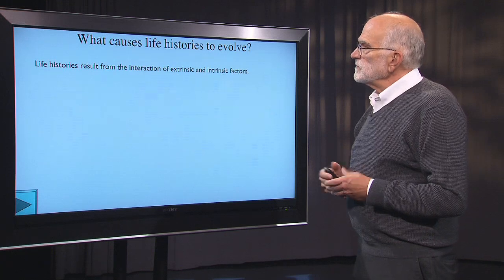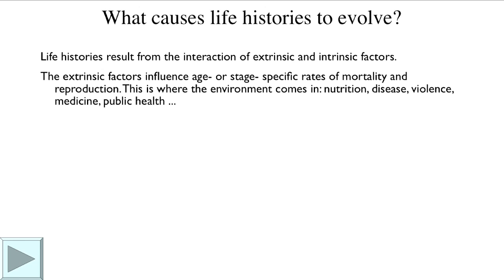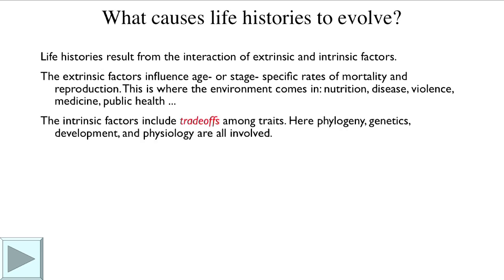Life histories result from the interaction of extrinsic and intrinsic factors. The extrinsic factors are things in the environment that influence age- or stage-specific rates of mortality and reproduction. That is where nutrition, disease, violence, medicine, and public health all enter the picture as selective agents. The intrinsic factors — things inside the organism — include trade-offs among traits. Trade-offs are highlighted here in red because they are such a central insight. All sorts of things are involved: phylogenetic history, genetics, development, and physiology.